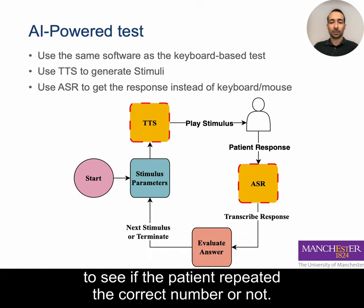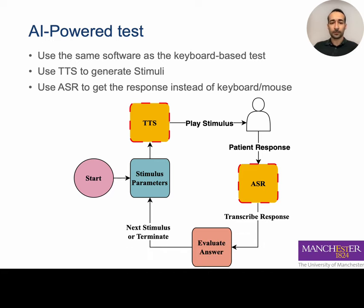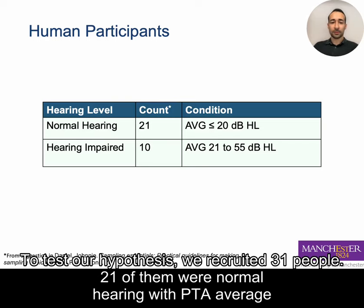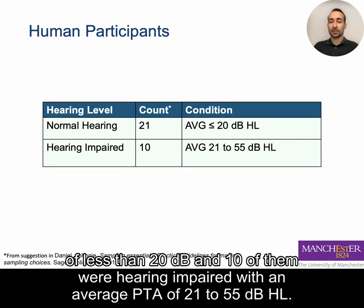The transcription is then compared to the original digit to see if the patient repeated the correct number or not. To test our hypotheses, we recruited 31 people: 21 were normal hearing with a PTA average of less than 20 dB, and 10 were hearing impaired with an average PTA of 21 to 55 dB HL.